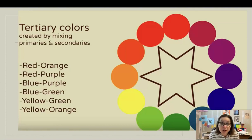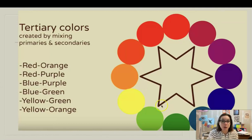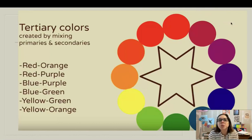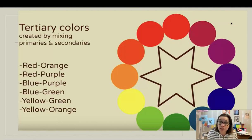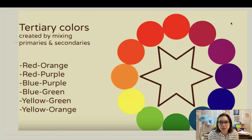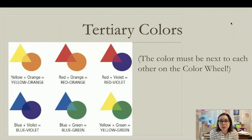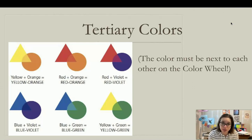We have one more set of colors on the color wheel: the tertiary colors, created by mixing primaries and secondaries together. When placed on the color wheel, they complete a finished color wheel. The names are easy to remember: red-orange is mixing red and orange, yellow-green is mixing yellow and green, and blue-green — like a turquoise or teal — is mixing blue and green. The key is that the colors must be next to each other on the color wheel — that's what makes them tertiary colors.